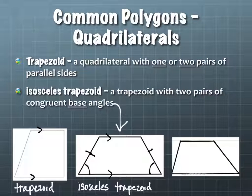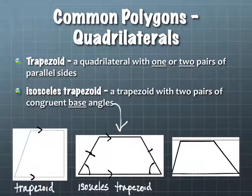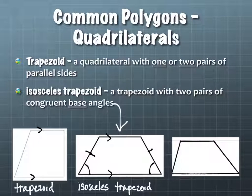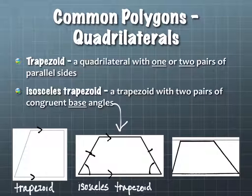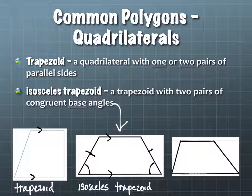Not only is a square a trapezoid, but a square would also be an isosceles trapezoid. This is one of the reasons I'm not a fan of this particular definition, because some odd-feeling things happen when we do that.